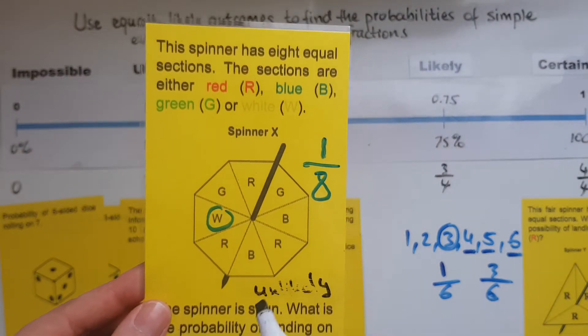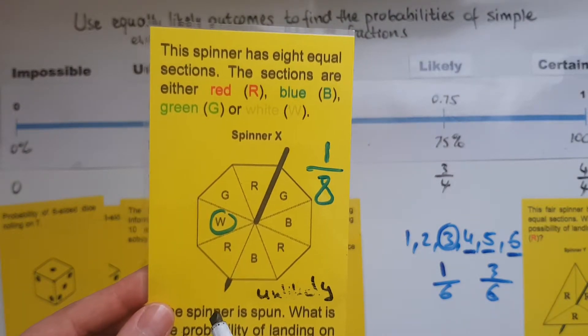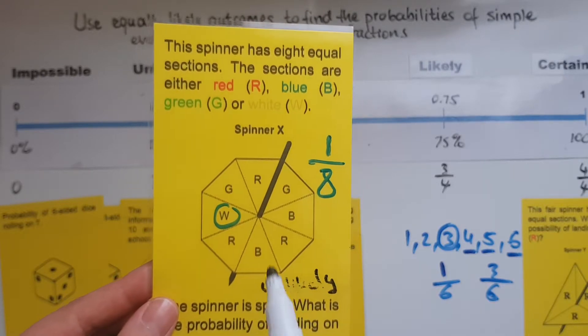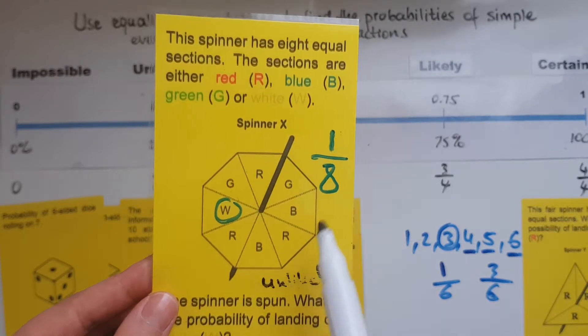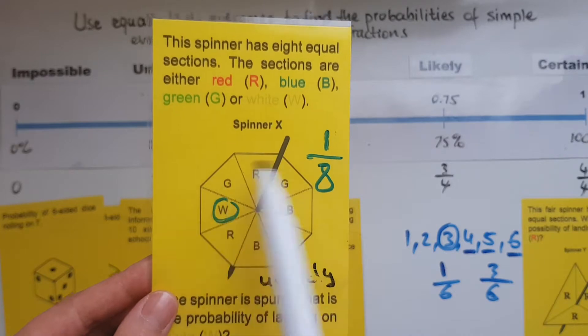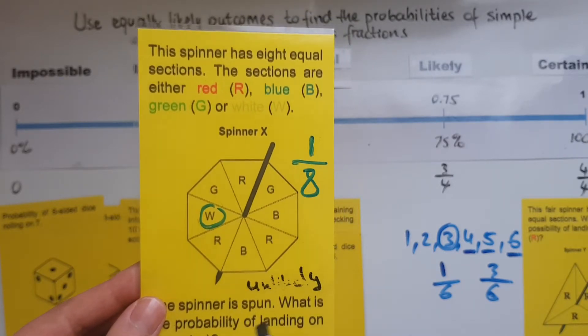And we also work this out as a fraction. The probability of the spinner landing on white is one out of eight. Only one is white out of the eight possible. So that's one eighth.